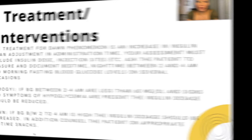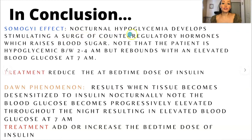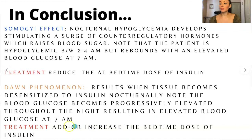In conclusion: with the Somogyi effect, nocturnal hypoglycemia develops, stimulating a surge of counter-regulatory hormones which raises blood sugar. Note that the patient is hypoglycemic between 2 and 4 in the morning but rebounds with an elevated blood glucose at 7 a.m. — treatment is to reduce the bedtime dose of insulin. Dawn phenomenon results when tissue becomes desensitized to insulin nocturnally; the blood glucose becomes progressively elevated throughout the night, resulting in elevated blood glucose at 7 a.m. — treatment is to add or increase the bedtime dose of insulin.